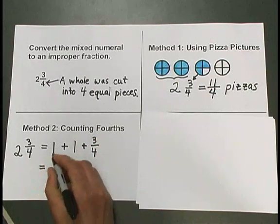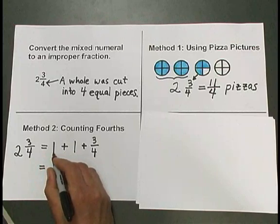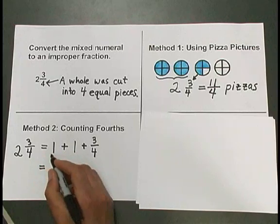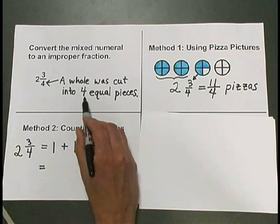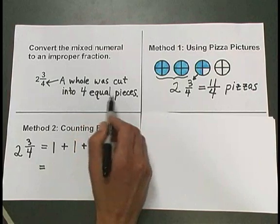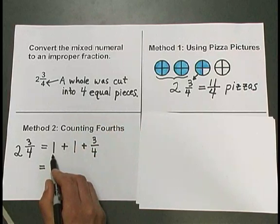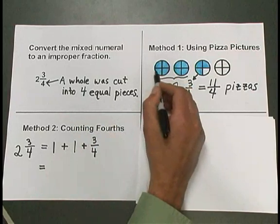Now each one of these wholes I can think of as being a certain number of fourths here. Again, I want to cut all my wholes into 4 equal pieces.